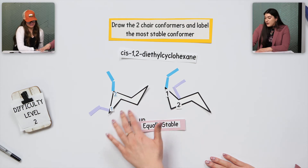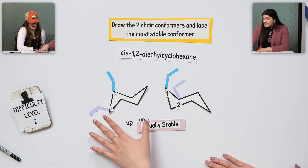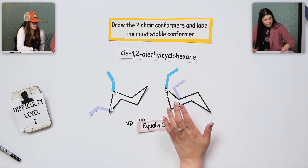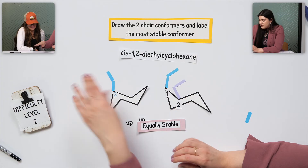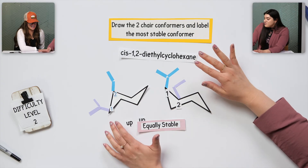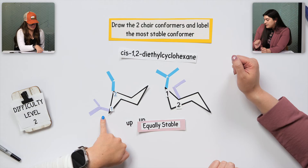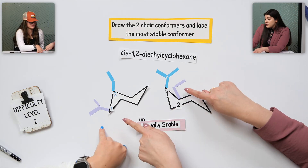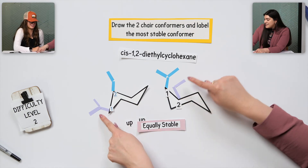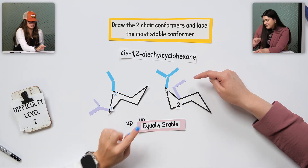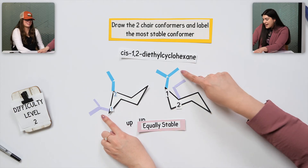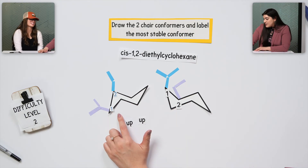This is a great example in case you do see this. The more equatorial positions there are, the more stable that chair conformation is. Let's say if we were comparing these two — which one would be better? This one. Why? Because there's more equatorial. Well, there's still only one equatorial position, but this one is now larger — three carbons instead of just two. The larger group wants to be in the equatorial position, so this one would be the most stable.